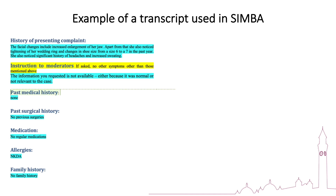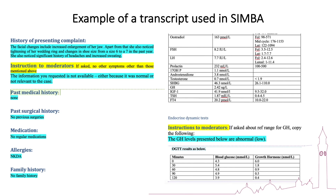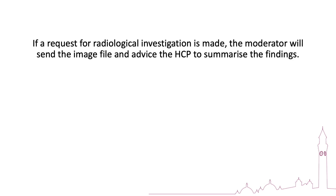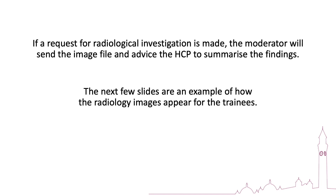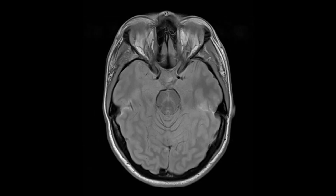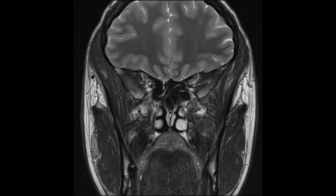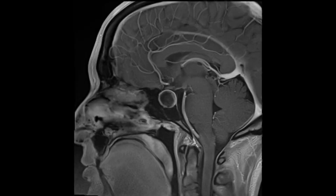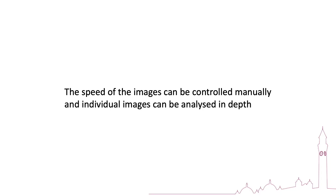Here's an example of a transcript that we use in Simba and the investigations that we provide as part of the simulation. If a participant requests a radiological investigation such as an MRI or CT, we send them the appropriate image file and ask them to interpret it. The next few slides give an example of how these images look, and the speed of these images can be controlled manually with individual images analyzed in depth if needed.